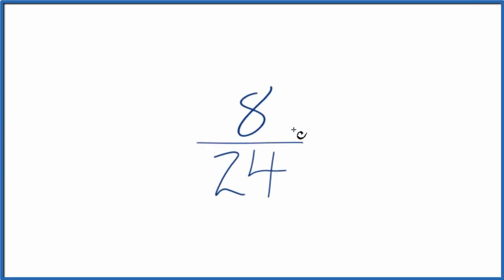In this video, we'll find a few equivalent fractions for 8 24ths. So first off, our first equivalent fraction, we could simplify 8 24ths. Since they're both even numbers, let's just divide the numerator and denominator by 2.